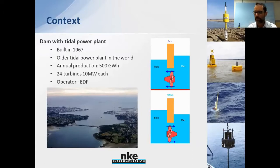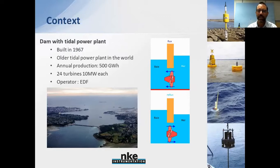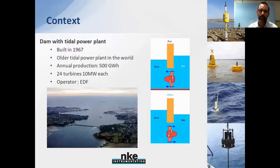They use the tides to move the machines in order to produce power. The power plant was built in 1977 — it is the oldest tidal power plant in the world. Since then, many other examples exist around the world, but this is the oldest one. The annual production is around 500 gigawatt-hours per year, with 24 turbines of 10 megawatts each, running completely across the river. The operator is EDF — Électricité de France.